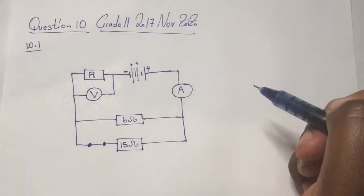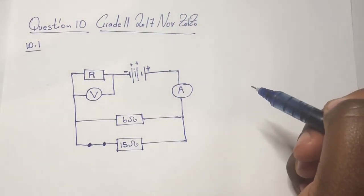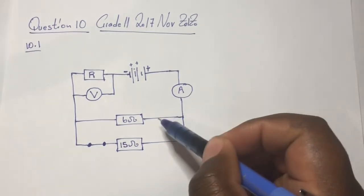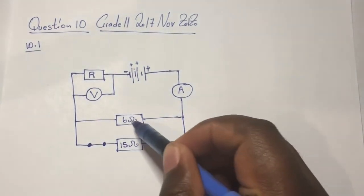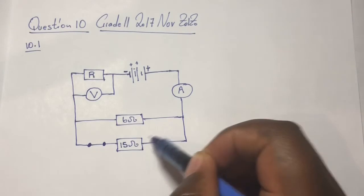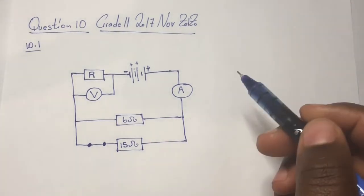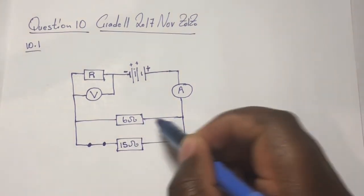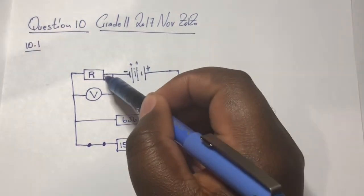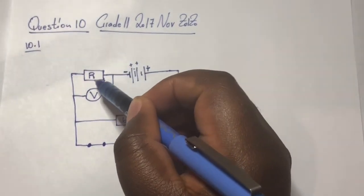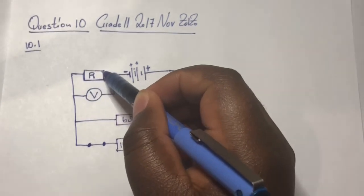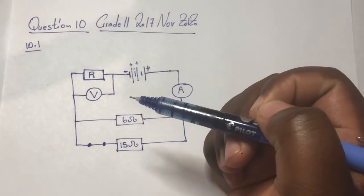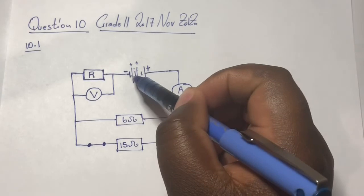Let's see again: we've got a parallel connection of 6 ohms and 15 ohms resistors. This connection of resistors is in parallel, and you've got this resistor of unknown resistance which is connected in series.